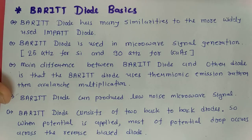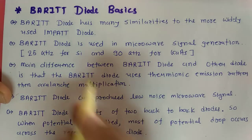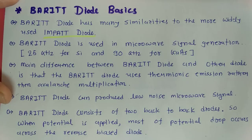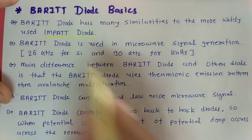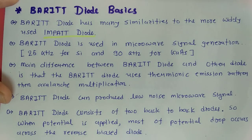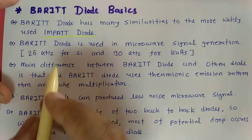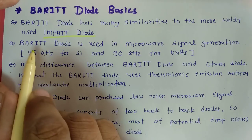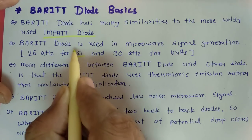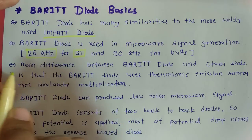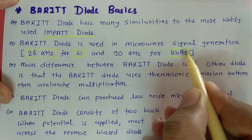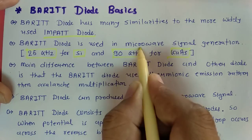Barrier Diode has many similarities with the widely used IMPATT diode in terms of structure. It is used primarily for microwave signal generation. Two different materials are used in its structure: silicon, which operates at 25 gigahertz, and gallium arsenide, which can be utilized for Barrier Diode functioning at 90 gigahertz.